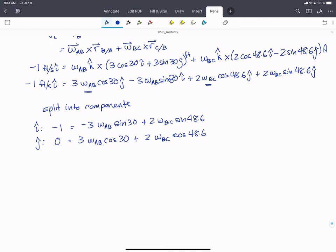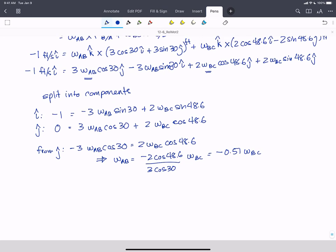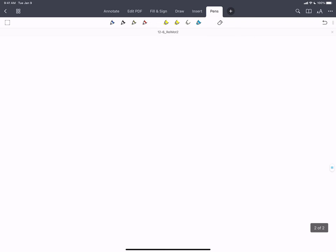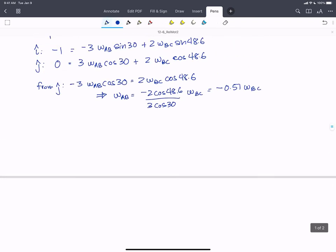And now we solve the equations. So from the j-hat equation, we get minus 3 omega AB cos 30 equals 2 omega BC cos 48.6. And that gives us an expression, omega AB is going to be minus 2 cos 48.6 over 3 cos 30 times omega BC. And that equals minus 0.51 omega BC.